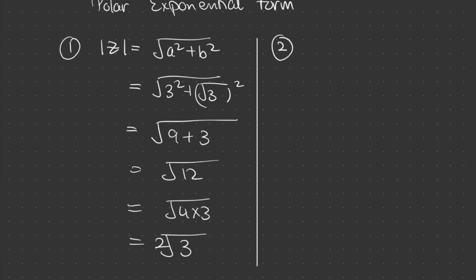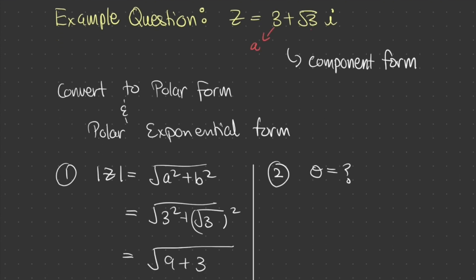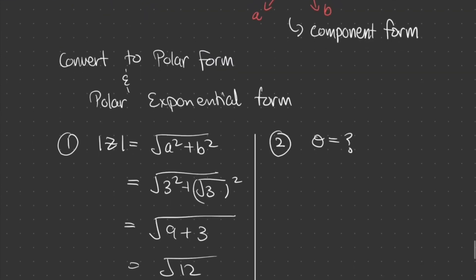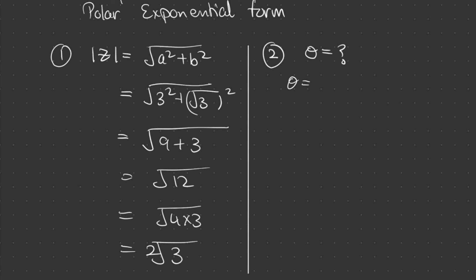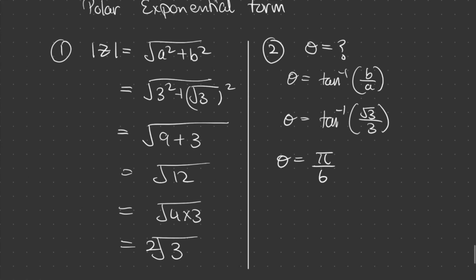Now, let's find theta. Now, these are values for a and b. When we try to find theta, we do theta is equal to tan inverse b on a. And therefore, theta is equal to tan inverse square root of 3 on 3. And if we use the exact trig ratios, we get that theta is equal to pi on 6, which is also equal to 30 degrees.